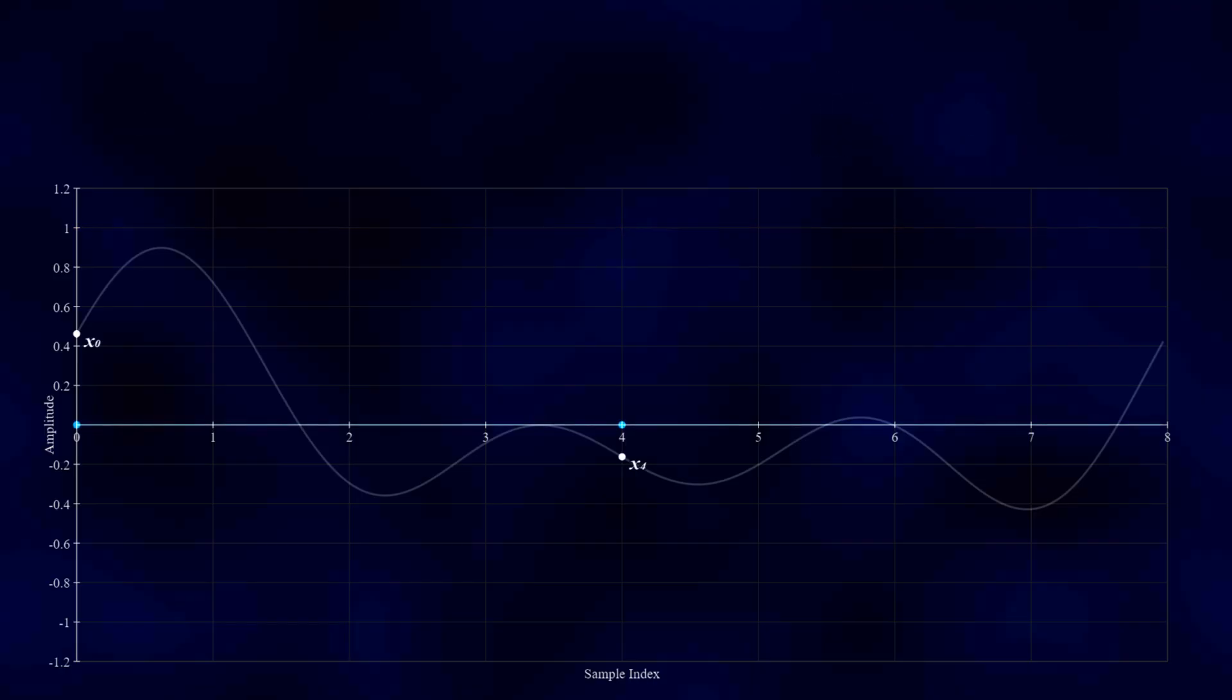Now what about the sine component? Take a look at where these samples fall on a sine wave at a frequency of zero. They both land at zero. This means that when we multiply the signal by these values, the result is always zero. Summing the two zeros still gives zero, so there is no sine component at this frequency.